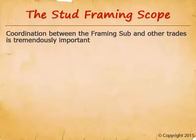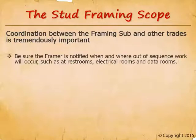There are many trades that intersect the framing work — anything recessed in, mounted on, or passing through a stud wall needs to be coordinated with the framing subcontractor. Be sure framing bidders are notified when and where out-of-sequence work will occur, such as at restrooms and data rooms. These rooms are on the critical path of the schedule, so framing subs must jump around the site to frame, rock, and tape isolated rooms, which has an inefficiency cost.